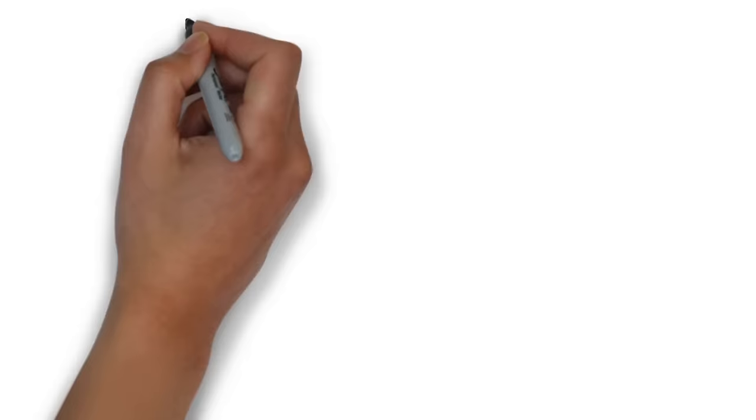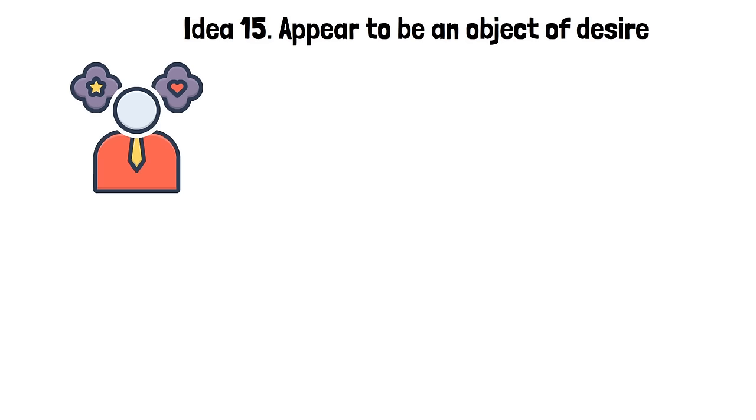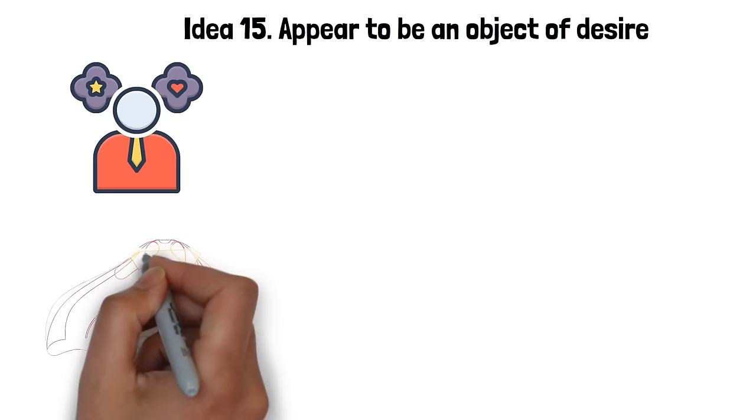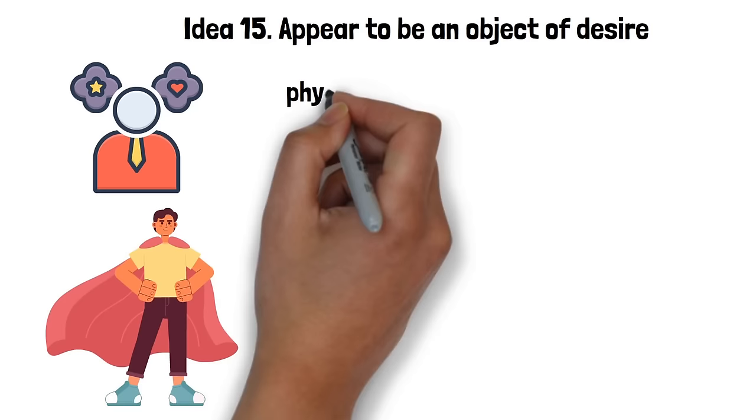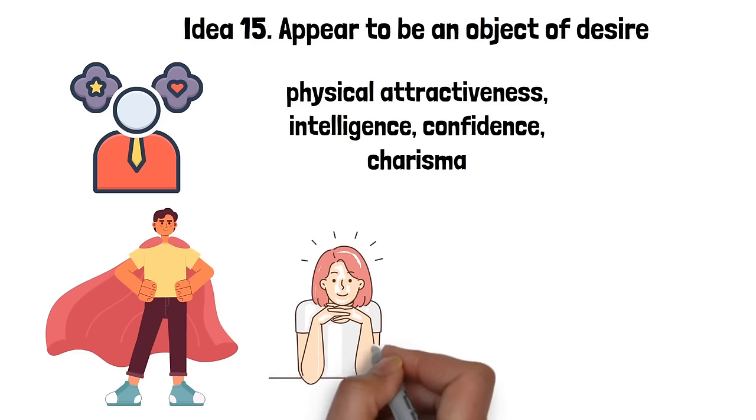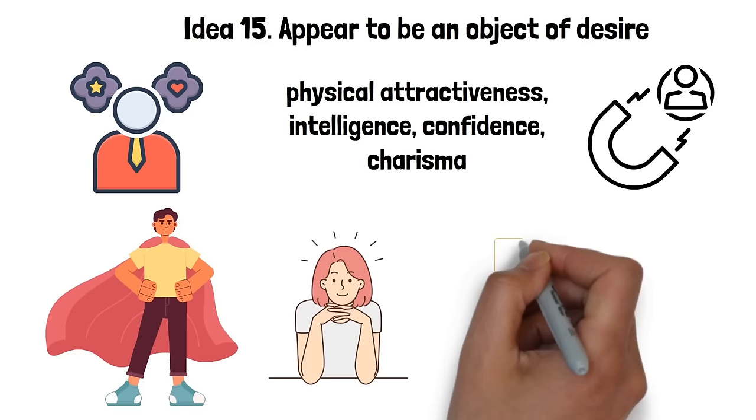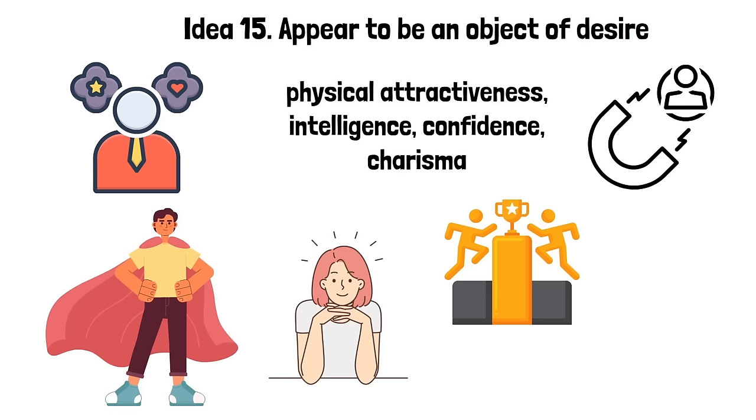Idea 15. Appear to be an object of desire. Appearing to be an object of desire is a seductive strategy that relies on creating an image of oneself as highly desirable. It's about presenting oneself in a way that embodies what the other person may desire or find attractive. This could be through physical attractiveness, intelligence, confidence, charisma, or other qualities that captivate people's attention. By positioning yourself as someone who is sought after, you create a sense of value and desirability around yourself. The allure lies in the perceived validation and competition that comes with being desired by others. This feeling of competition can spark an increased interest in you, making you appear more appealing. It's a matter of human psychology. We often want what others want or what seems hard to get.